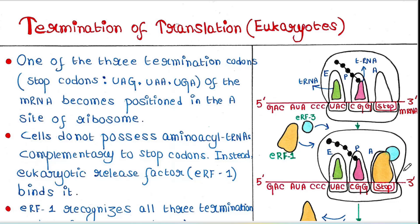Translation consists of three phases: initiation, elongation, and termination. In our previous lectures we have discussed about initiation and elongation. Today we will talk about the last part — termination.